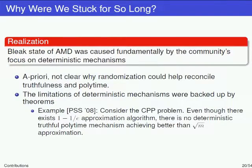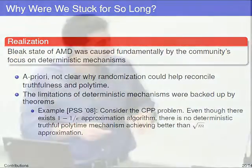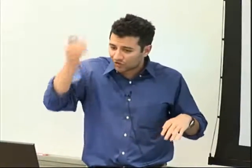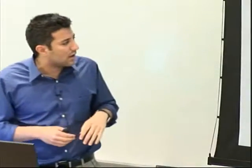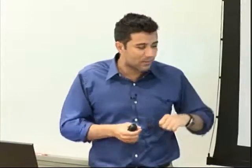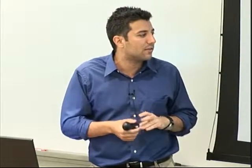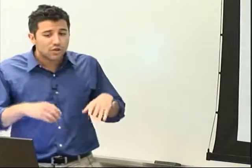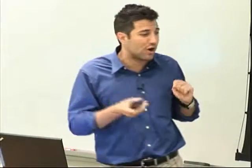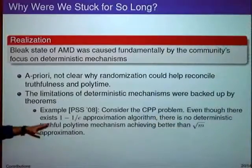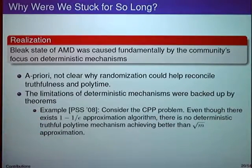Here's an example of such an impossibility result. Papadimitriou, Schapira, and Singer showed that for the combinatorial public projects problem — picking K projects to satisfy people — even though the problem has a 1 minus 1/e approximation algorithm, there is no deterministic truthful polynomial-time mechanism that does better than a square root of the number of items approximation. So there were strong impossibility results for deterministic mechanisms, and it wasn't clear a priori that randomization would let you achieve 1 minus 1/e.